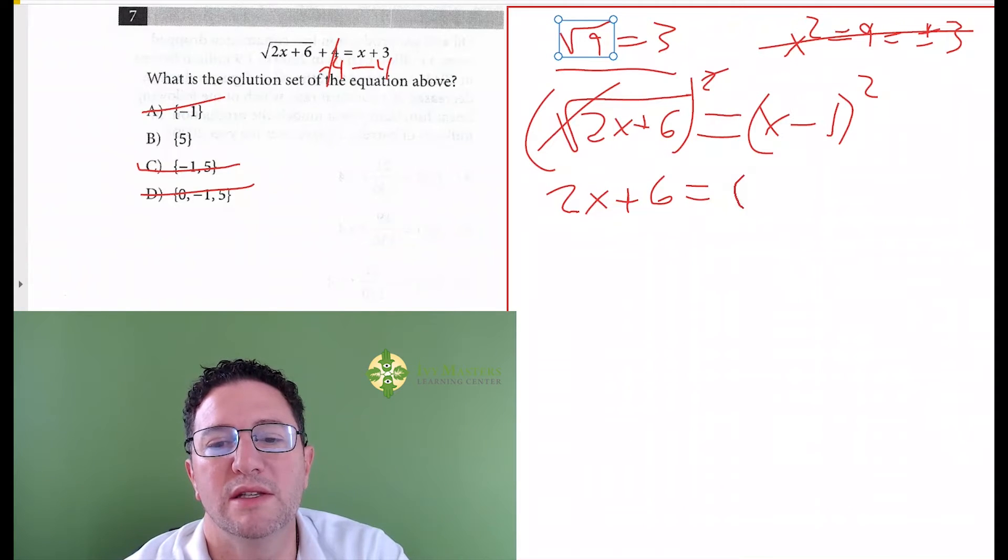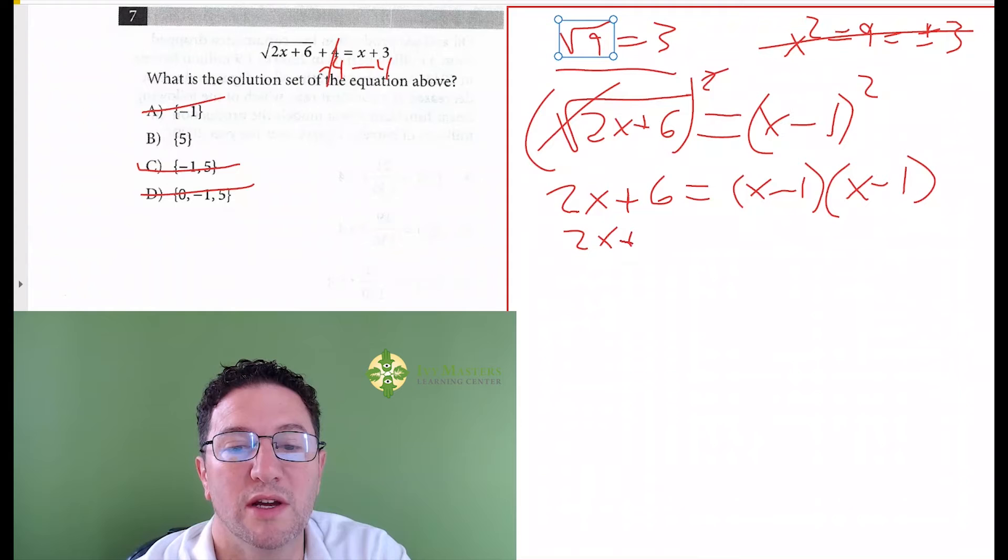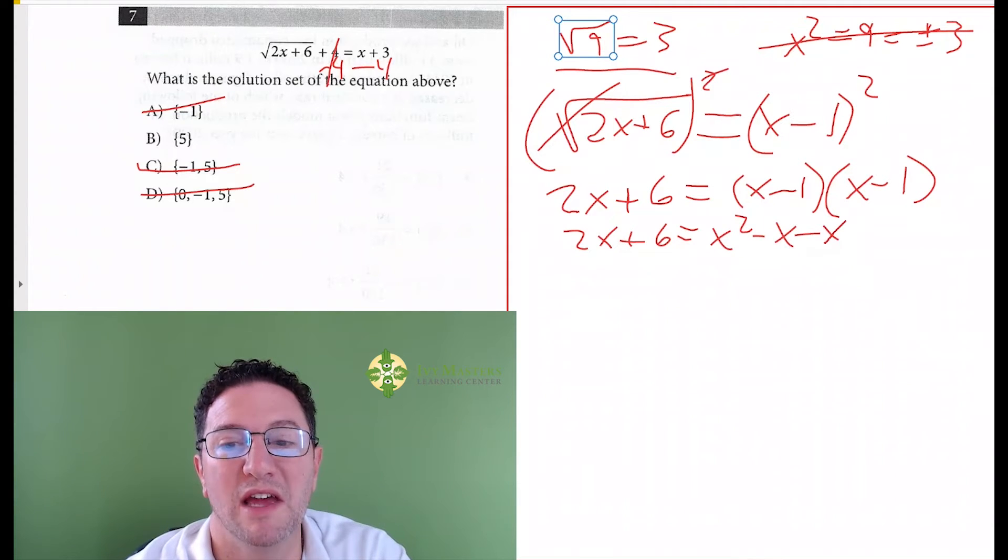On the right, what do you do? It's x minus 1 quantity squared, you do not distribute the exponents, it's x minus 1 times x minus 1. And then what is it? 2x plus 6 equals x squared minus x minus x plus 1. And then you've got 2x plus 6 equals x squared minus 2x plus 1.